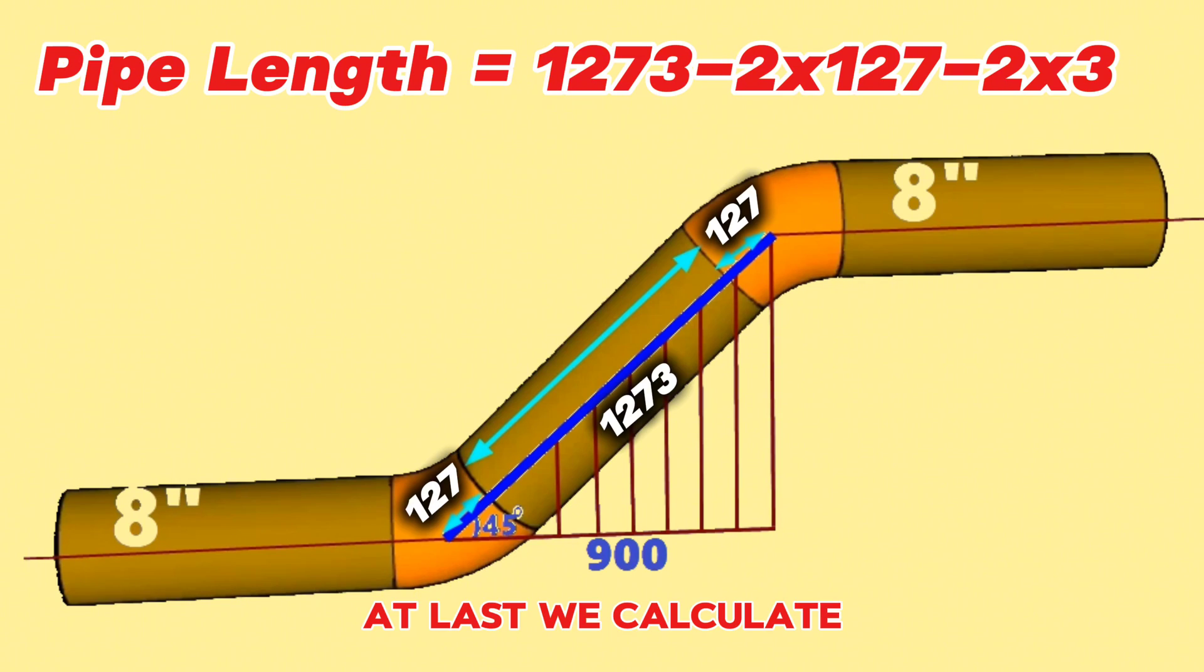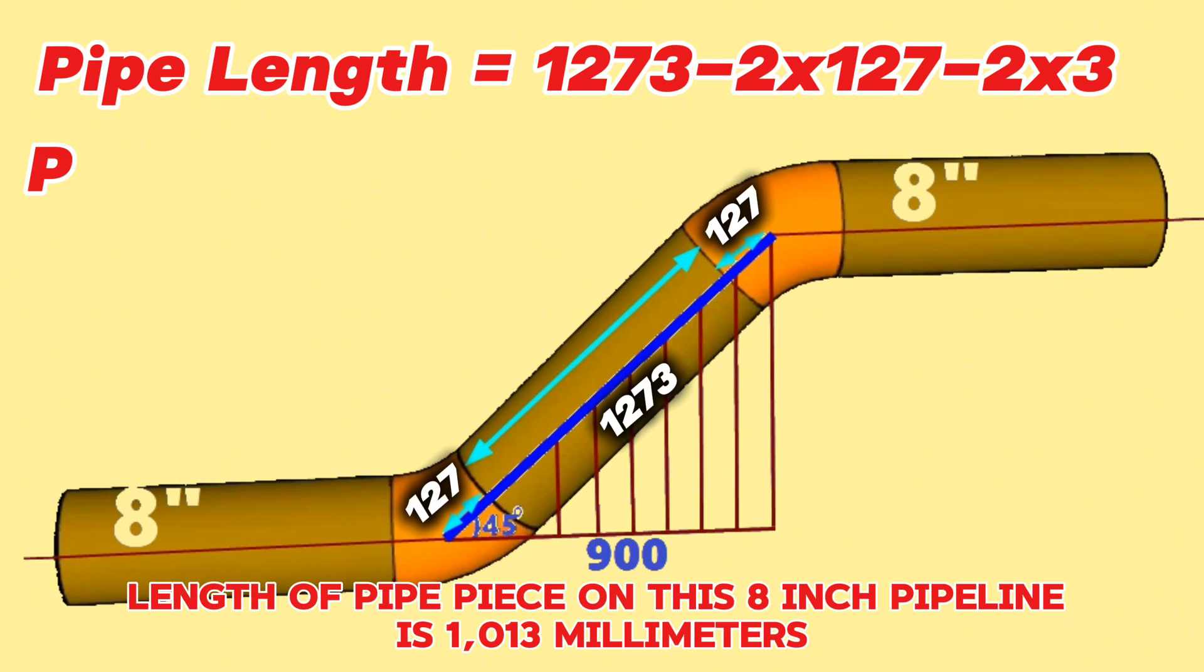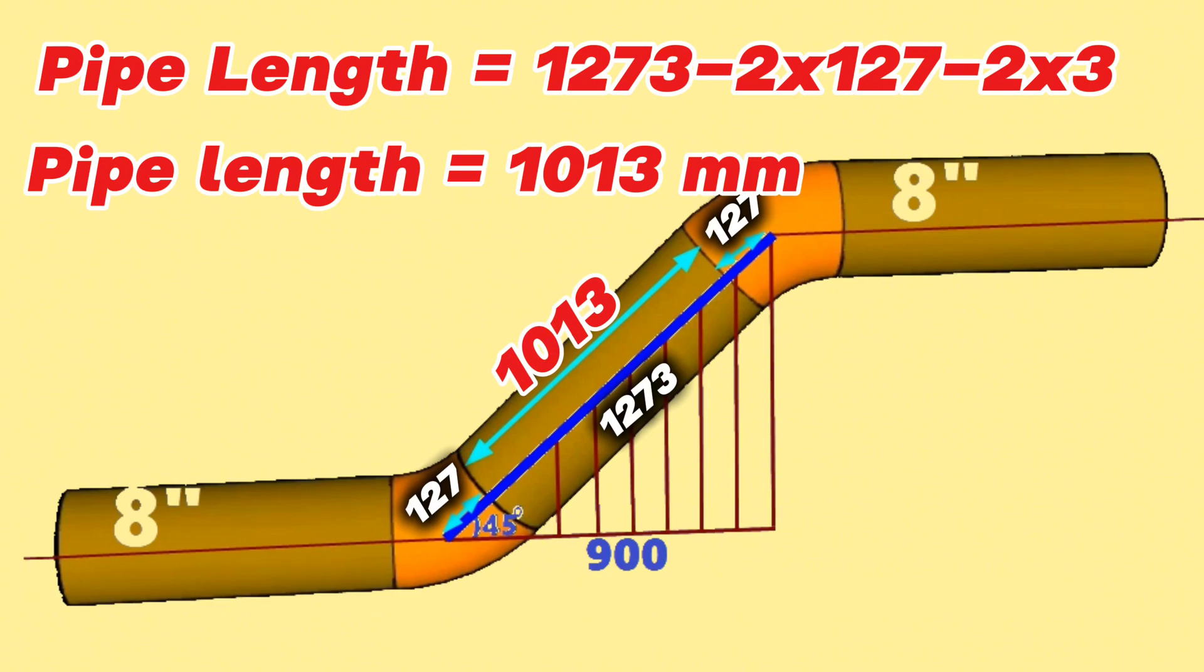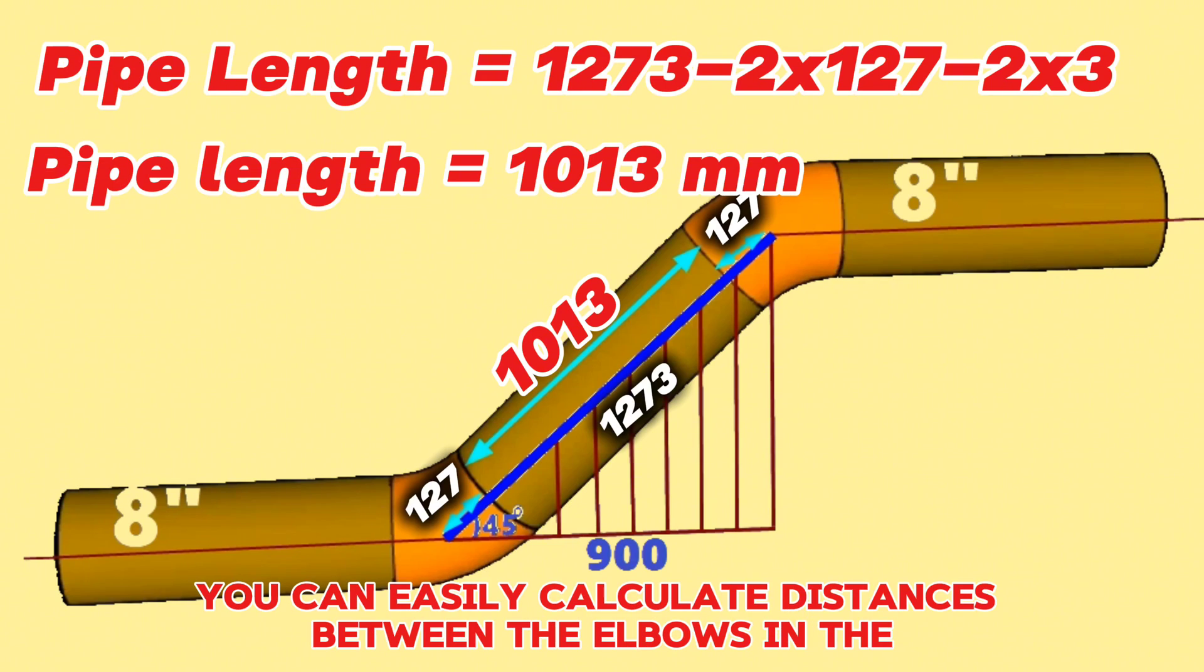At last, we calculate and find the length of pipe piece on this 8-inch pipeline is 1,013 millimeters. By using this method, you can easily calculate distances between the elbows in any pipelines.